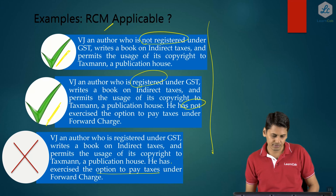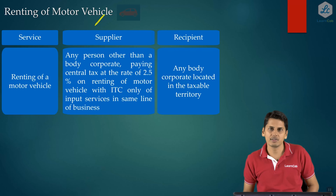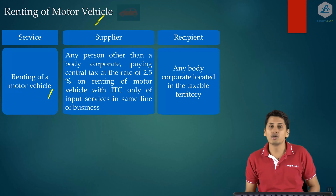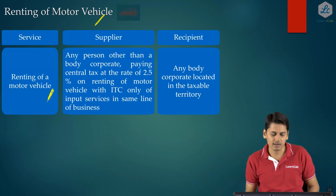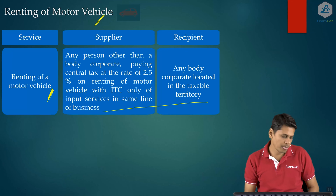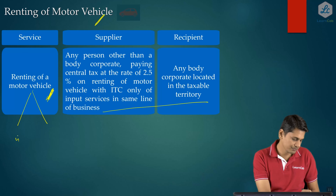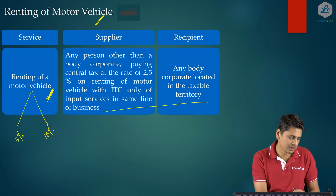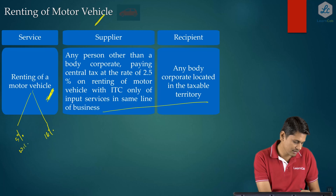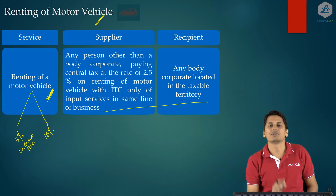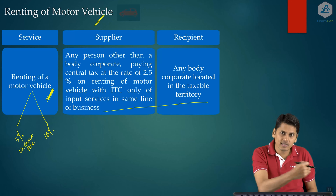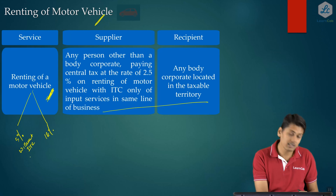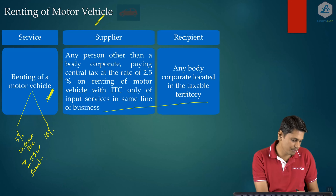The next is a new entry in the reverse charge notification: service of renting of motor vehicle. Before discussing this entry, let us look at the applicable tax rates. For renting of motor vehicle there are two rates: 5% without input tax credit (with one exception — ITC of input services from the same line of business is allowed) and 18% with full ITC.